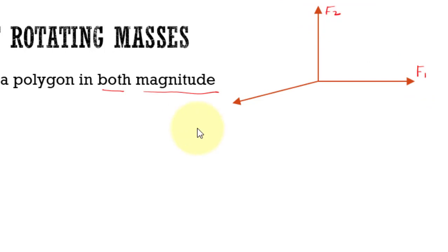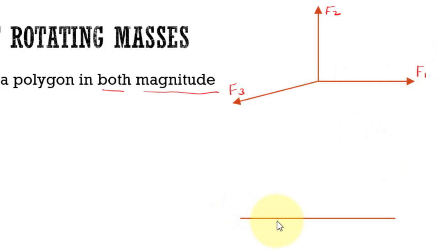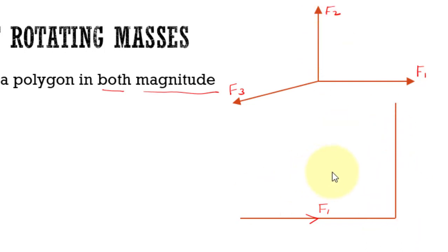We are provided with a three-force system — force one, force two, force three. We are going to draw the force polygon for this given system of forces. Force one is located in the horizontal direction with magnitude F1. To represent this force, I draw a line which represents the side of the polygon in both magnitude as well as direction, taking its exact magnitude and direction.